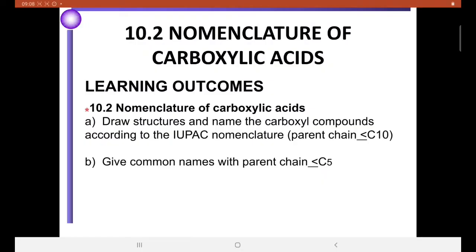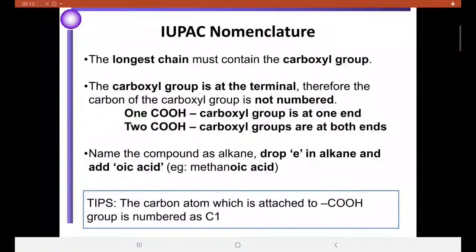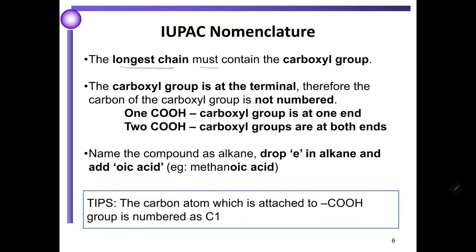Point two: nomenclature of the carboxylic acid. First, we draw the structure and name the carboxyl compound according to IUPAC nomenclature. Then, give the common name with the parent chain less than or equal to C5. To name the carboxylic acid, we look at the longest chain that must contain the carboxylic acid. The carboxylic acid is at the terminal, therefore the carbon of the carboxylic acid is numbered as C1. For one COOH, the carboxylic acid is at one end.